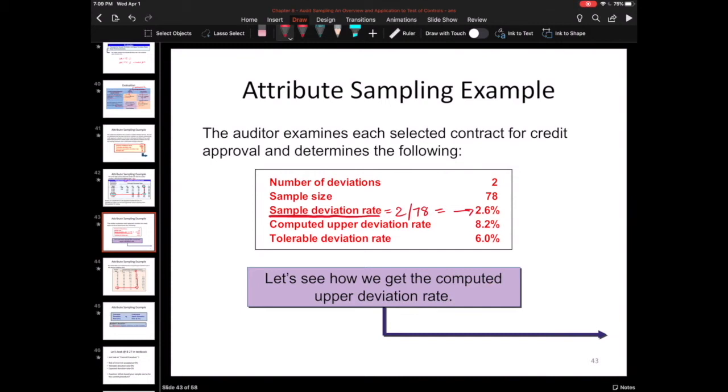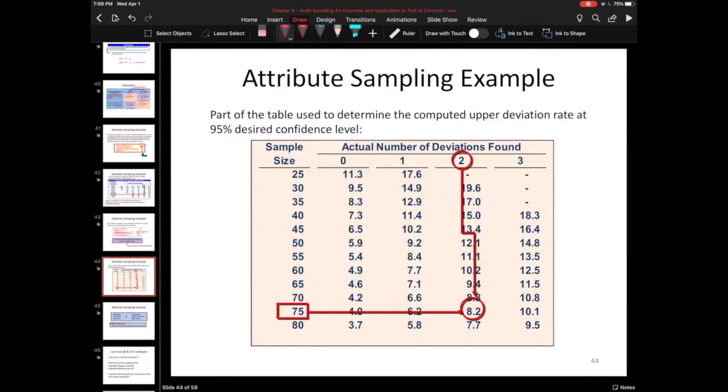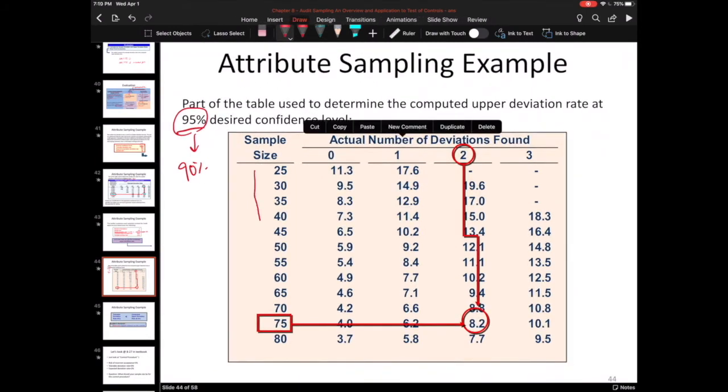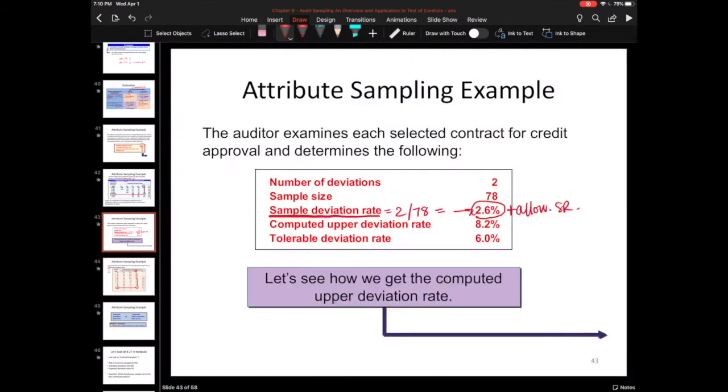We said on the prior slide, remember, we said that represents the sample deviation rate plus an allowance for sampling risk. So that is also going to come from a table. And again, there is going to be a 95% table and a 90% table. Always make sure you're using the right one. And they'll have sample size down the left hand side and number of deviations across the top here.